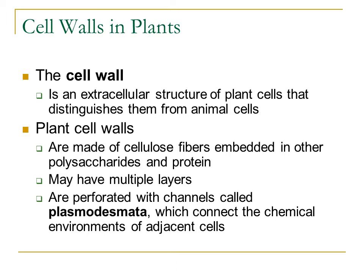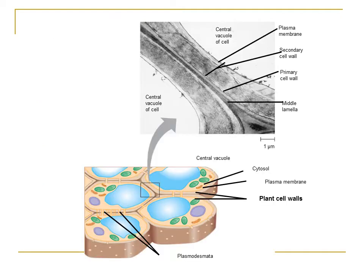Plant cell walls are made of cellulose fibers, which tend to be embedded in other polysaccharides and proteins, and they have multiple layers. What's cool about cell walls is they have these little channels that travel between adjacent cells, called plasmodesmata. They just connect one cell to the next, and certain nutrients or substances that one cell might need that another cell might have can travel through these channels. Here's a picture of those channels — you can see all these plant cells lined up next to each other, with tiny little tunnels, the plasmodesmata, allowing substances to move between adjacent cells.